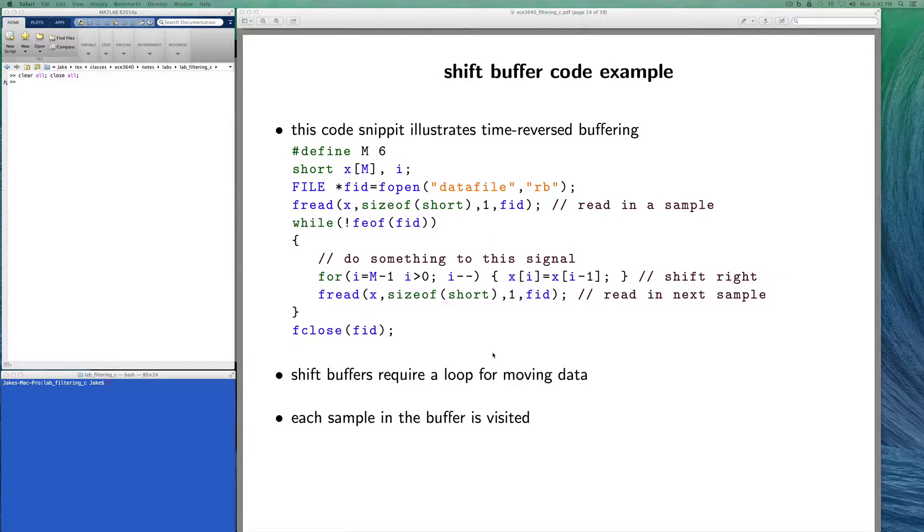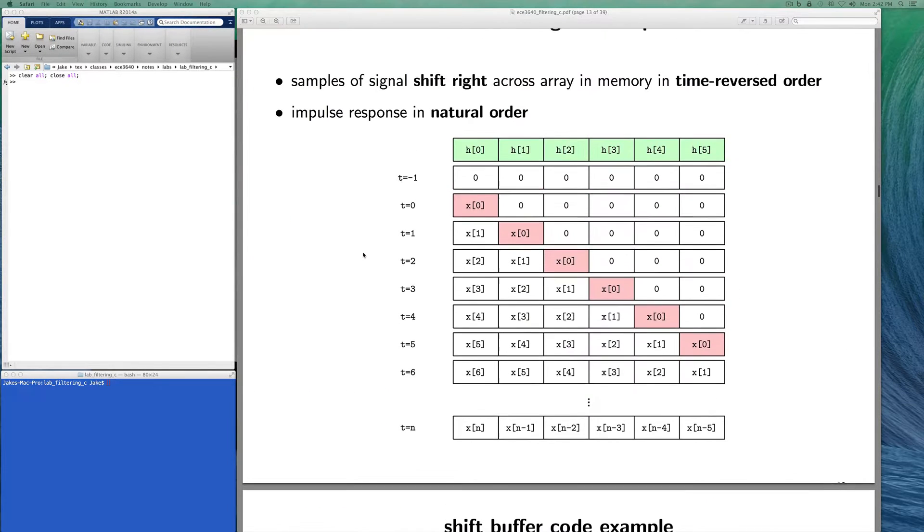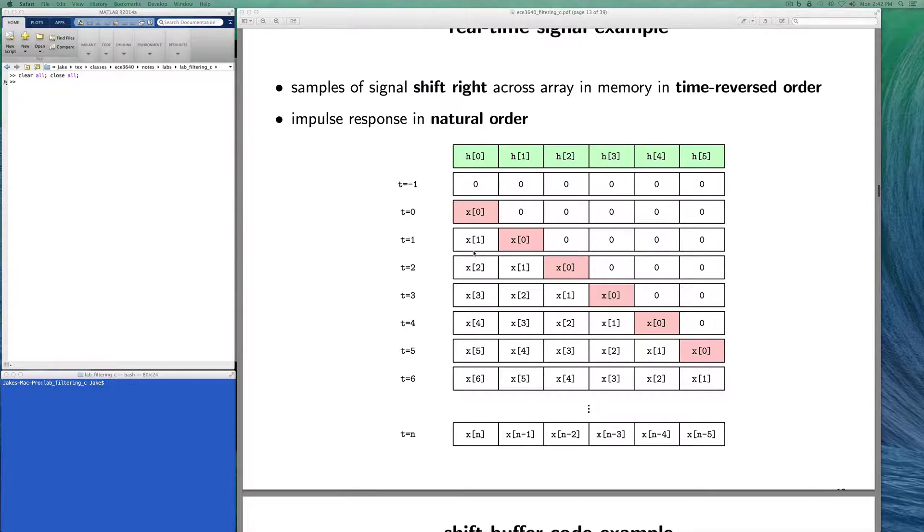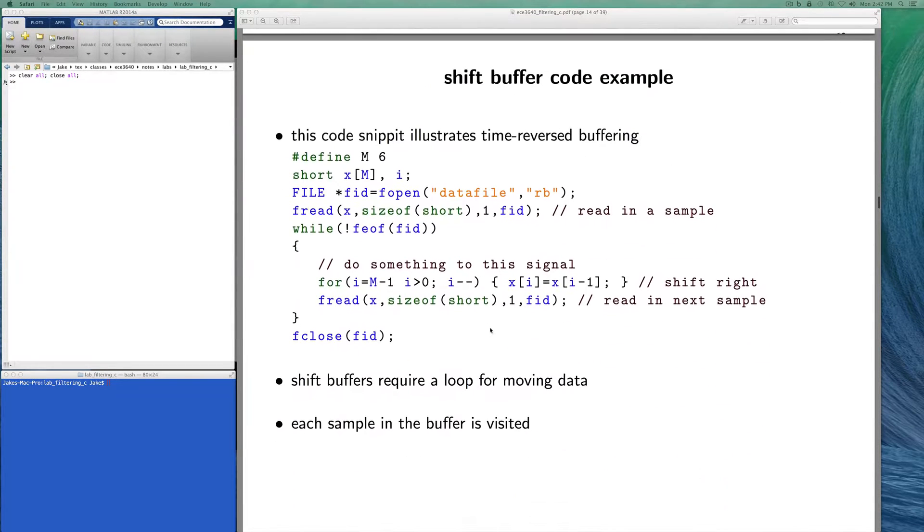I refer to these techniques as using a shift buffer because the samples in the buffer have to shift every time we want to process a new incoming sample. If you think about that, if you have a very long filter, this could be an extensive amount of move operations going on just to keep the data shifting through the array. So this code shows how we would open a file and just read in a sample. Notice in all the fread statements in this code, we're only reading in one sample at a time, and we're reading it into the zeroth element of the array, which is statically allocated.